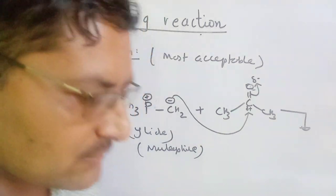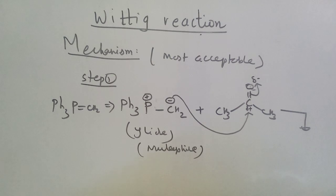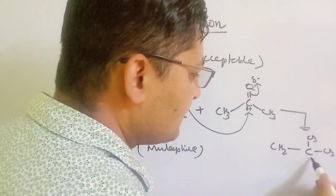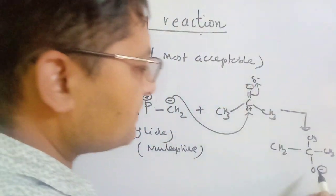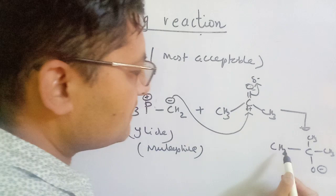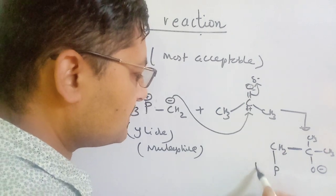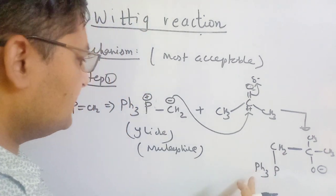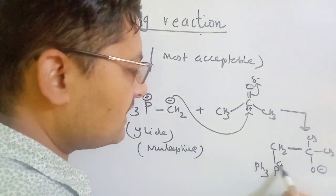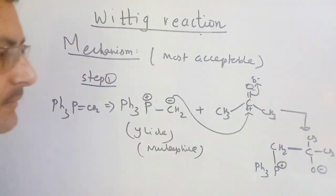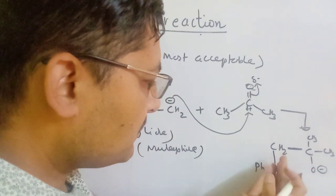We can write this intermediate: the carbon from CH2 is now bonded to the carbonyl carbon (e.g., from acetone, with two methyl groups). Oxygen carries a negative charge (O minus), and phosphorus carries a positive charge (Ph3P plus). This zwitterionic intermediate is called the betaine.